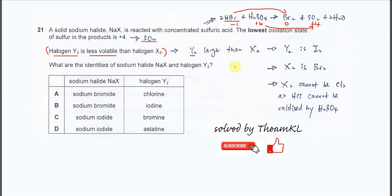Comparing bromine and iodine: iodine has a larger size than bromine. So we are quite sure that Y₂ is iodine and X₂ is bromine.